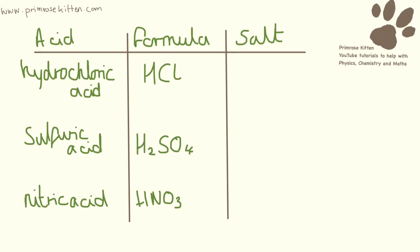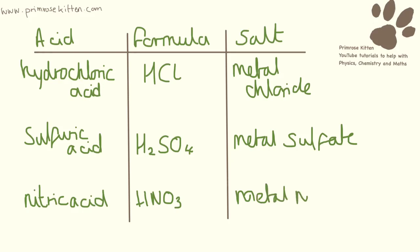Now the salts that each of these produce: hydrochloric acid is always going to produce a metal chloride, sulfuric acid is always going to produce a metal sulfate, and nitric acid is always going to produce a metal nitrate. It's really important that you remember these.